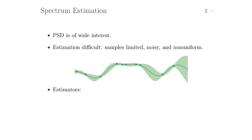Estimators of the PSD can roughly be categorized as, firstly, parametric methods, which typically assume a parametric form of the function, where the parameters are often estimated from data, which then results in the parametric form of the PSD. We have already seen two modern examples of this: the sparse spectral approximation, where we parametrize the PSD with a symmetric average of lines, and the spectral mixture kernel, where we parametrize the PSD with a symmetric mixture of Gaussians.